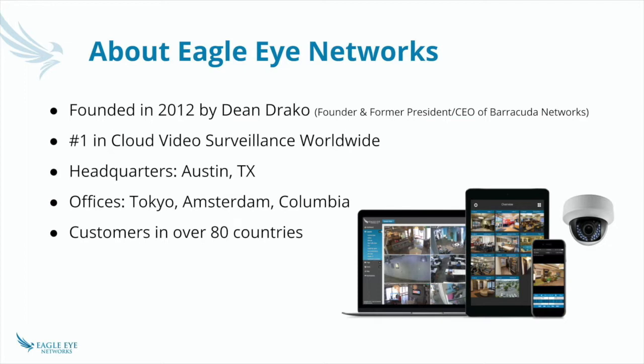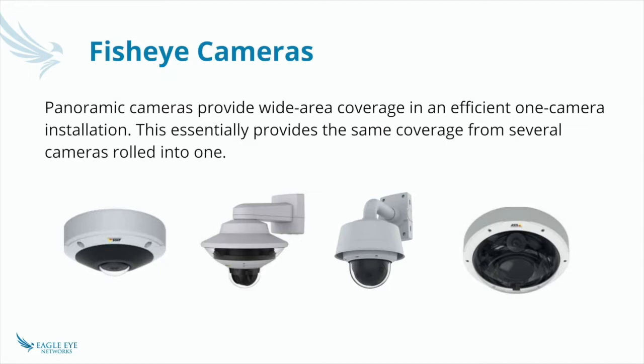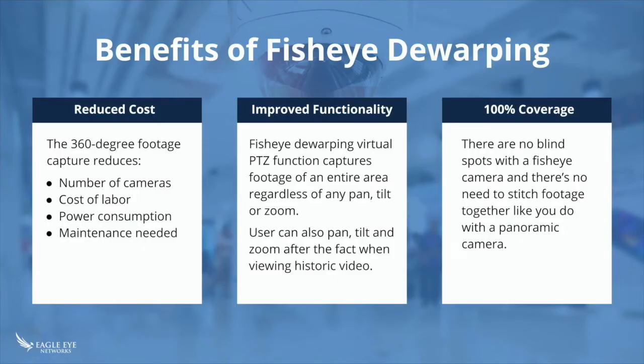Today we're going to talk about fisheye cameras. As the Director of Product Management, I've had so many requests for fisheye cameras over the last couple of years. So now we've actually done the work — I'm going to show you how you can use them. A fisheye camera is essentially a camera that has a 360-degree view, providing the same coverage as multiple cameras. It can take the place of a PTZ camera and/or multiple fixed cameras where you'd otherwise have to stitch images together.